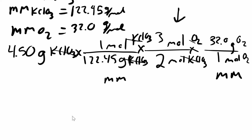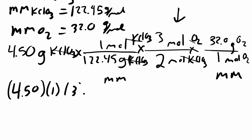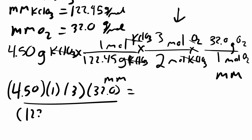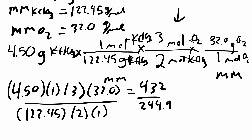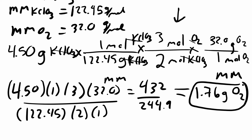The last step is the calculator. Multiply everything on top: 4.5 × 1 × 3 × 32 = 432. Multiply everything on the bottom: 122.45 × 2 × 1 = 244.9. Divide top by bottom: 432 ÷ 244.9 = 1.76 grams of oxygen. That's your final answer.